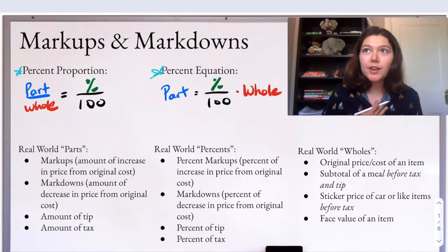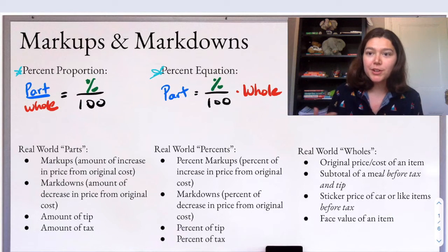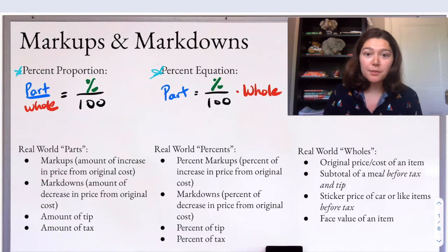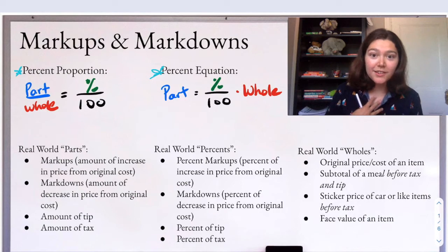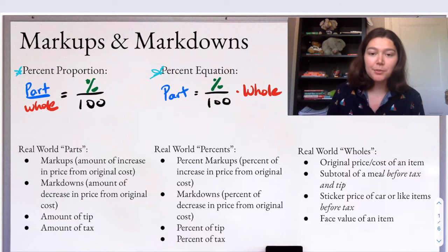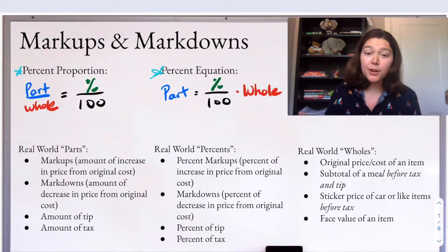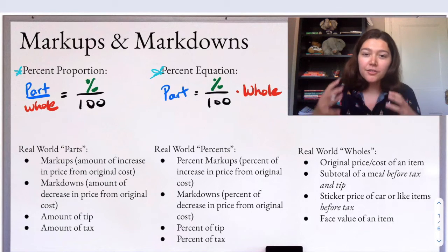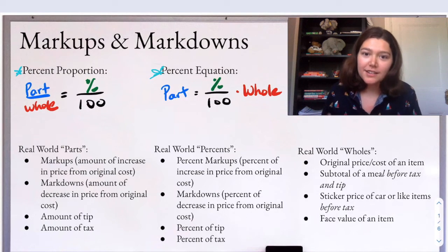If I'm a store and I buy something from my distributor for $10, and then I resell it to the customer for $15, there's a $5 markup because I pay $10 for it and then I'm charging someone else $15. So that increase in price is going to be a markup and it's an example of a part when we're solving these questions because it's a part of the whole of that original cost.